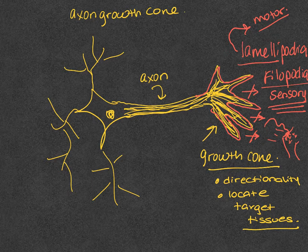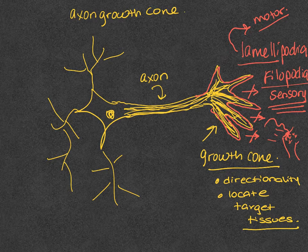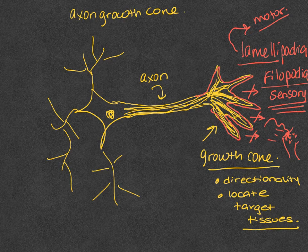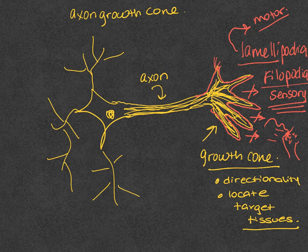And basically, the way that it finds its way to the target tissue is by means of elongation and contraction with a number of philipodia extensions called microspikes.